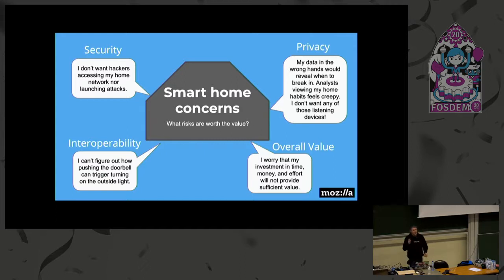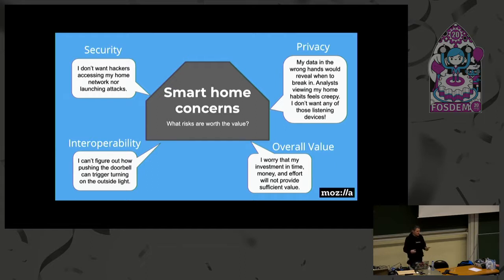In an IoT context, interoperability approaches are mostly zero — it's a vertical silo from device to application. Instead of one remote control, you have thousands of apps on your phone with no way to make them work together. That's mostly a market issue, not a technical problem. Running your smart home with DIY projects can be time-consuming, so this project tries to make it easier for everyone, even non-developers, to deploy a solution at home without too much effort.